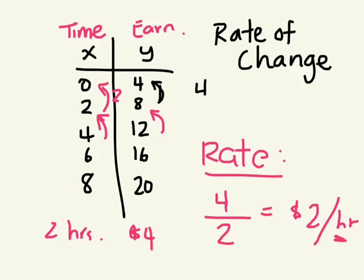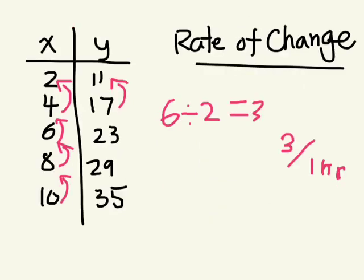So the rate is per 1. You always want to look at the rate at which each variable is changing by. So your y value was changing by 6. Each time we see an increase of 6.